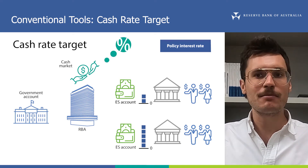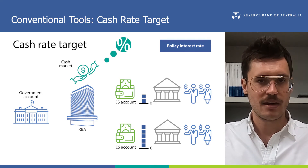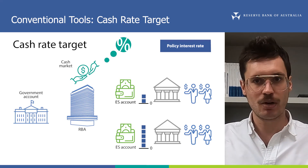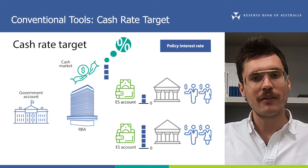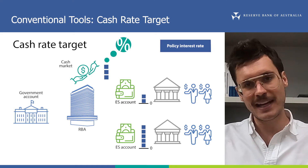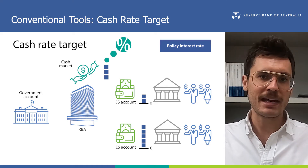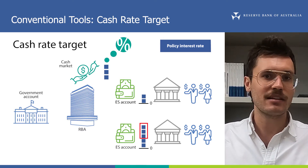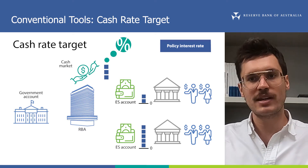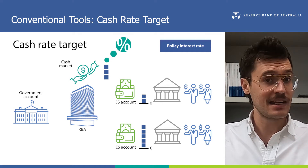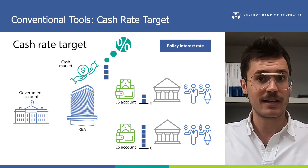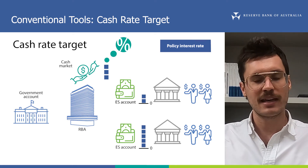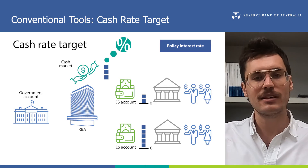The cash rate indicates the price the bank has paid to borrow that cash. The next day, the bank must pay back the cash it has borrowed with interest, perhaps from new flows it receives into its ES account. Of course, if a bank is borrowing cash, another bank has to lend it to them. Other banks may have spare cash in their ES account that they can lend and earn some profit from. The cash rate also indicates the return they receive for lending. So in summary, the cash market is a place where banks can borrow and lend cash to each other overnight to make sure they have enough cash handy in their ES accounts to settle payments. The cash rate tells us on average how much they paid or received to do this.